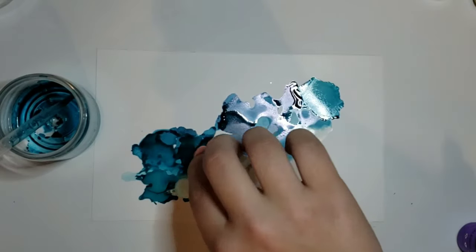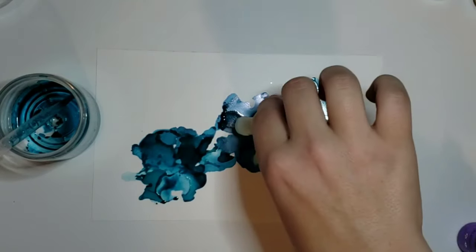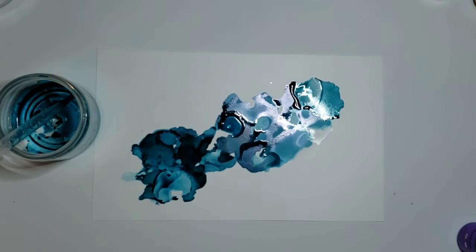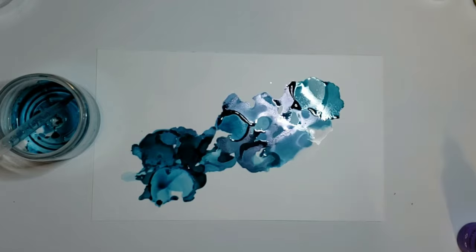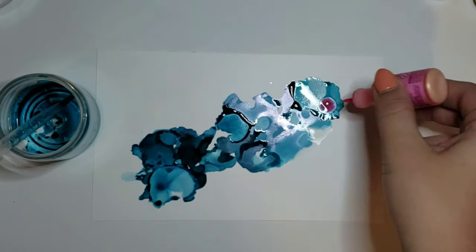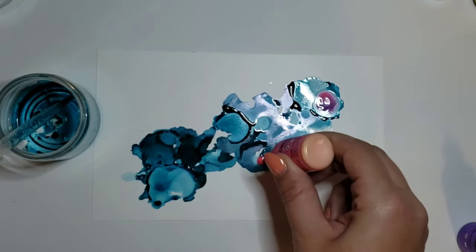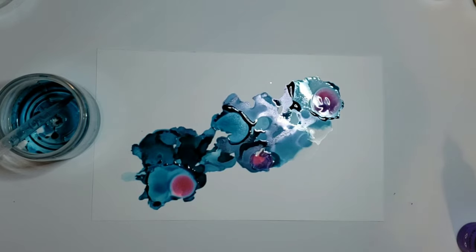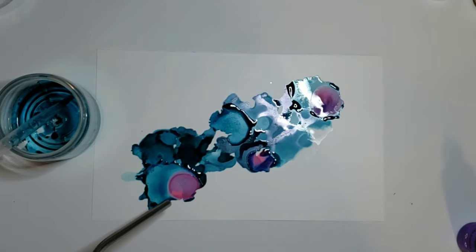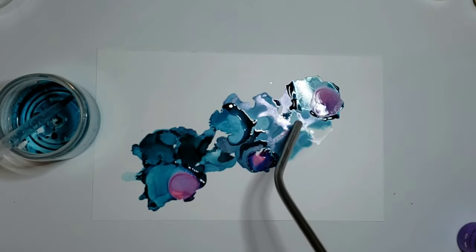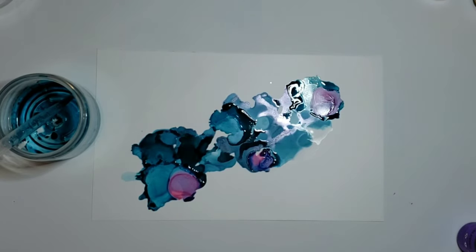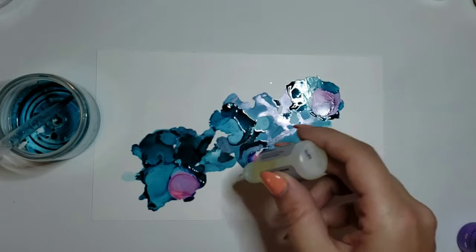I skipped ahead a little bit because I'm just playing around with these inks and trying to learn how they work. I'm using a different color which is this pearl pink, and you can see that when I try to blow it, it dries almost immediately and doesn't move around. That's because I didn't add any alcohol to it.